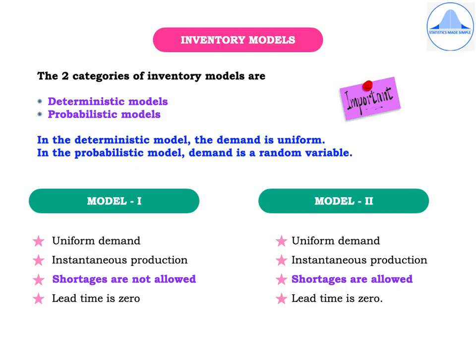The two categories of inventory models are deterministic models and probabilistic models. In the deterministic model, the demand is uniform, whereas in the probabilistic model, the demand is a random variable. The basic differences between Model 1 and Model 2 are: in Model 1 there is uniform demand, instantaneous production, shortages are not allowed, and the lead time is 0.